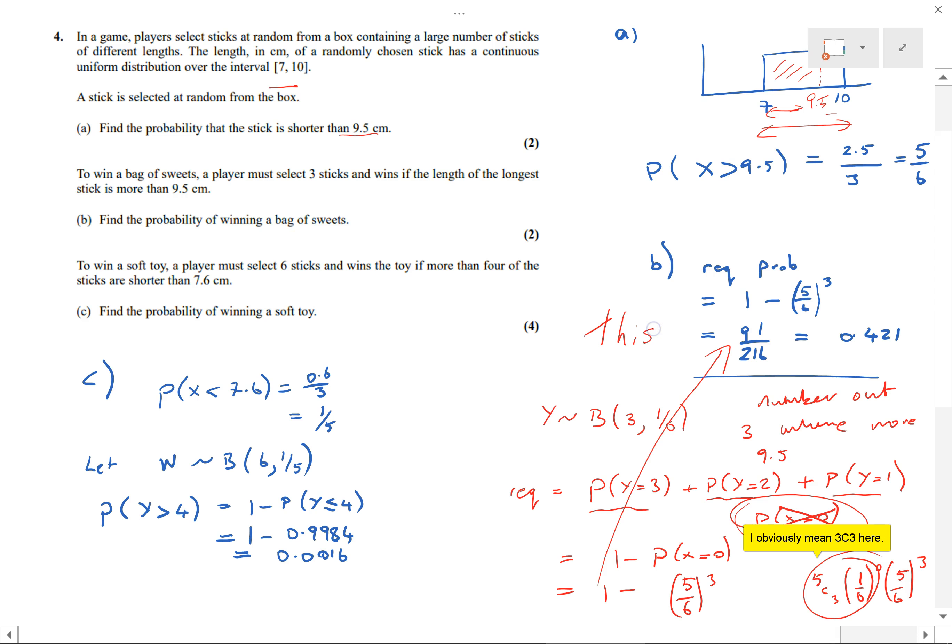I hope that helps. Part c is a similar thing but it's probably slightly less confusing in terms of the wording. This time we've got six sticks being chosen and it wants the probability—it was talking about them being shorter than 7.6. This is the probability that one of them is shorter than 7.6.